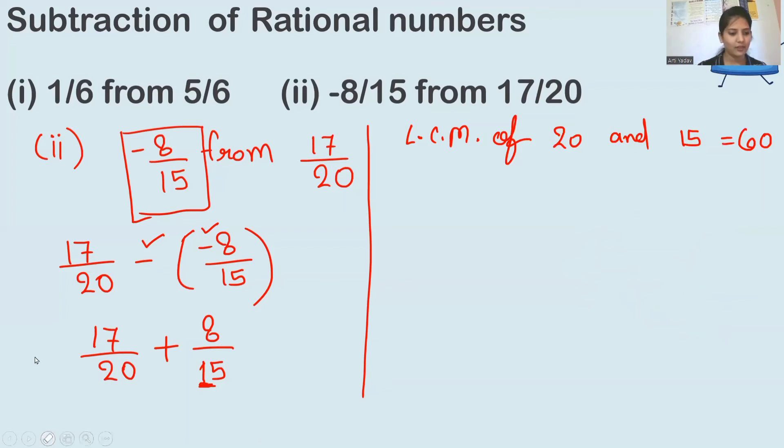Now what I will do? 60 will be the common denominator. 60 divided by 20, this denominator, is 3. Then 3 into 17 because numerator is 17. So 3 into 17 is 51. 17 threes are 51.